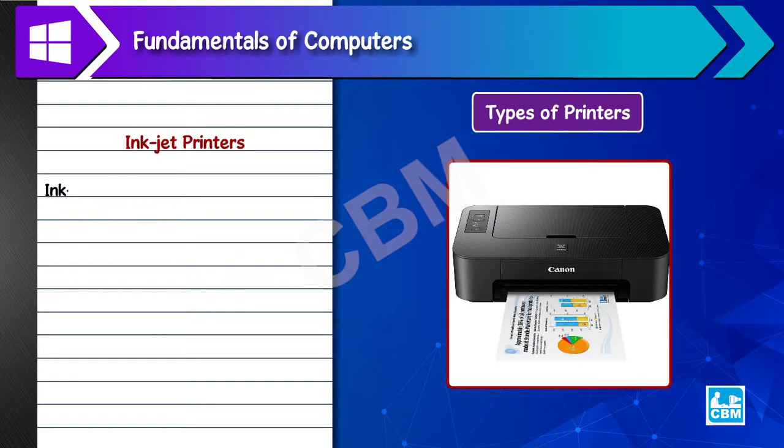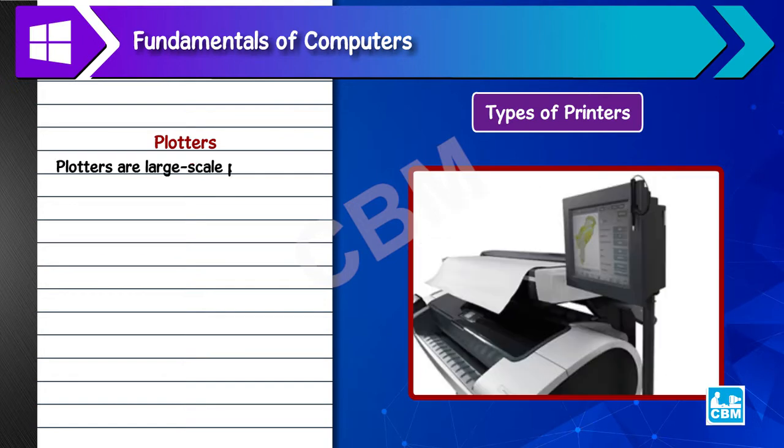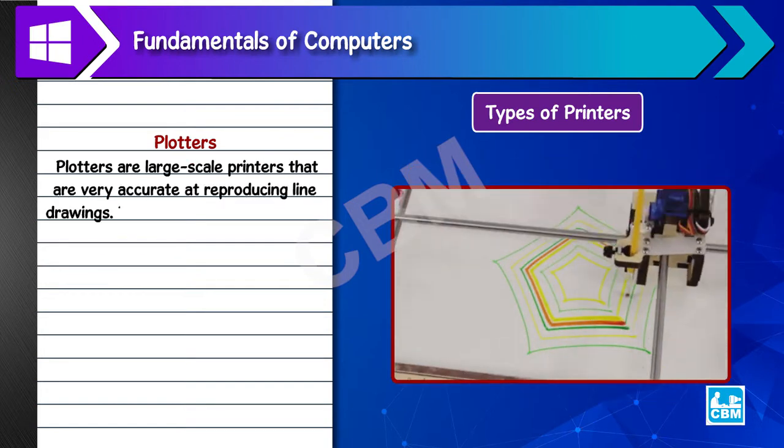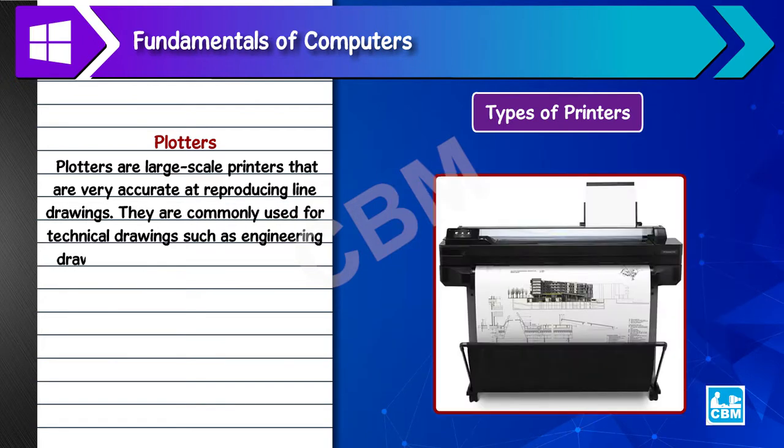Inkjet printers - Inkjet printers spray tiny ionized drops of ink onto a page to create an image. Plotters - Plotters are large scale printers that are very accurate at reproducing line drawings. They are commonly used for technical drawings such as engineering drawings or architectural blueprints.